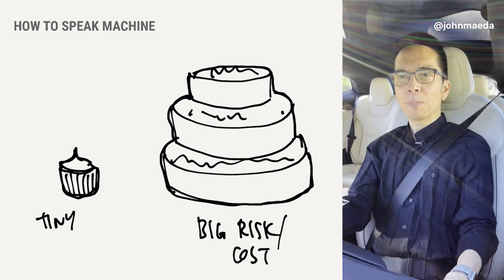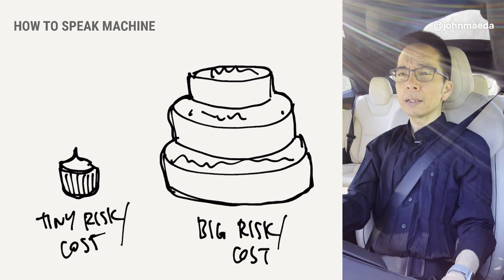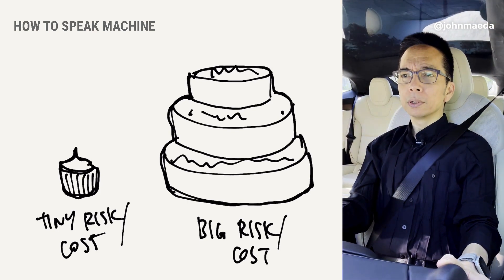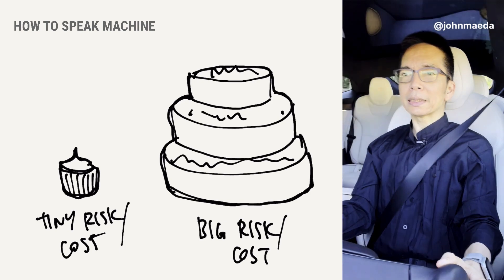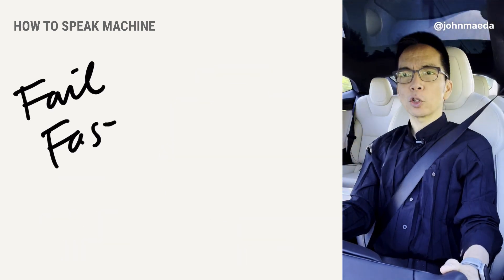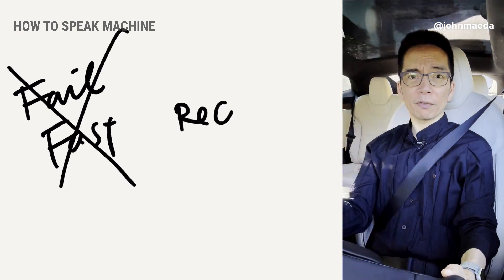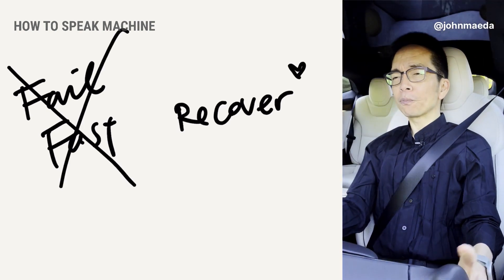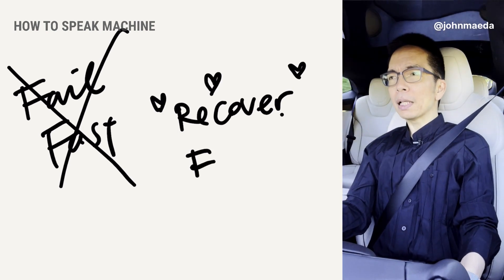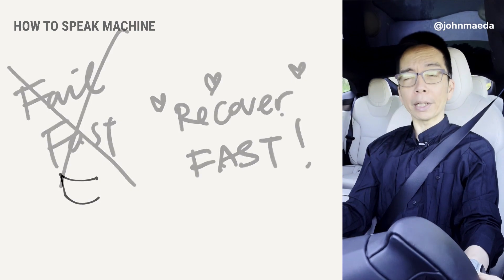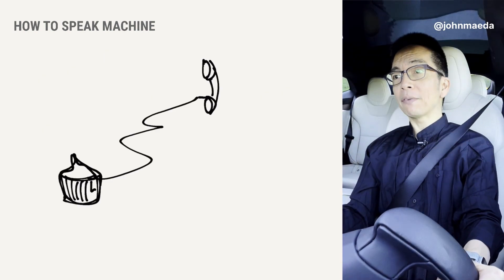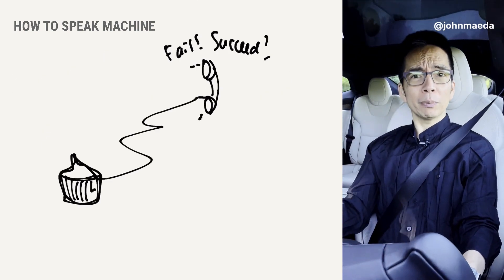It's this capability that makes computation so powerful. Because we always like to say fail fast or whatever. Well, no one likes to fail fast — they like to recover fast. And so by having data about what's happening out there early, you get to fail fast and recover extremely quickly.